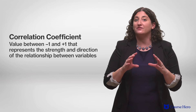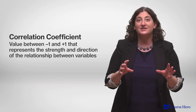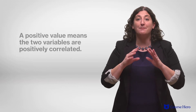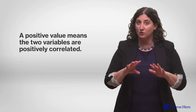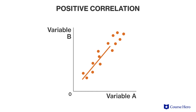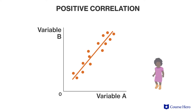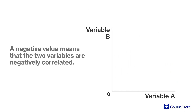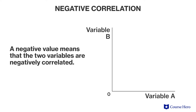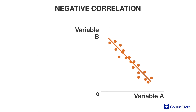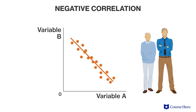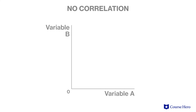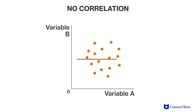The correlation coefficient is written as a numerical value between negative one and positive one. A positive value means the two variables are positively correlated — as one variable increases, so does the other. For example, age and height are positively correlated in children. A negative value means the variables are negatively correlated — as one increases, the other decreases, such as how agility tends to decline as a person ages. The closer the coefficient is to negative one or positive one, the stronger the relationship. A coefficient of zero indicates no relationship exists between the variables.